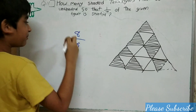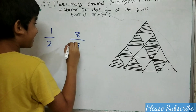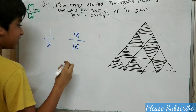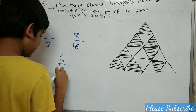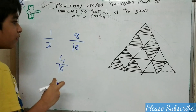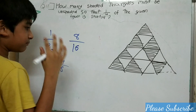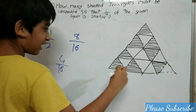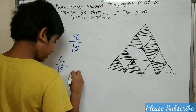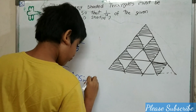So 8 by 16 is 1 by 2. One fourth of 16 is 4. So we need to unshade 4 triangles. My answer is 4.